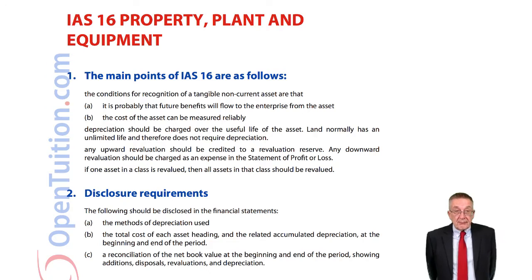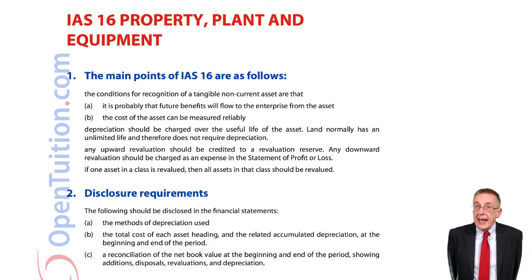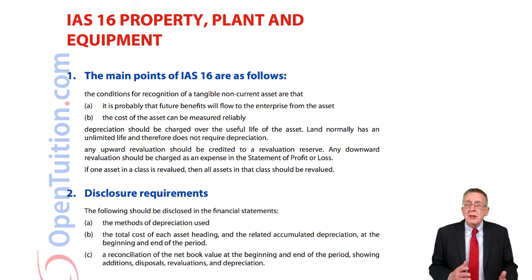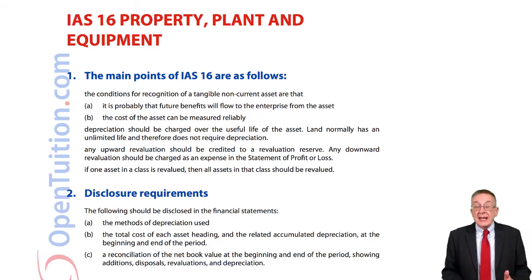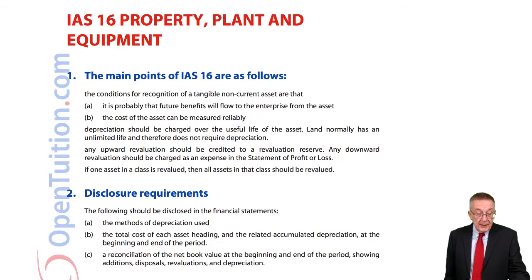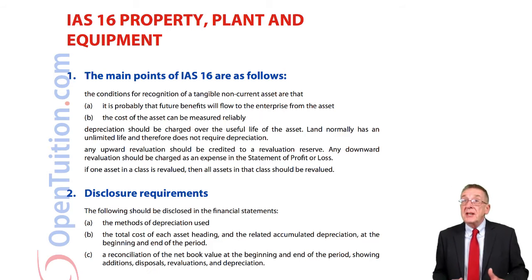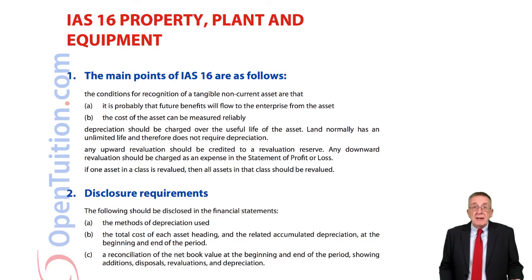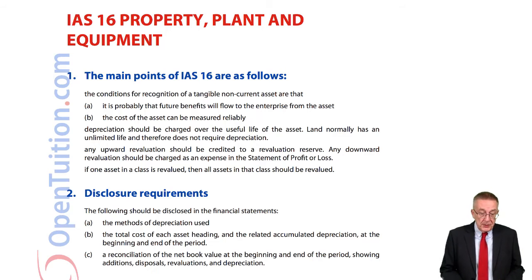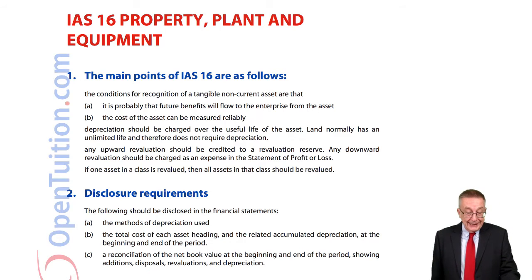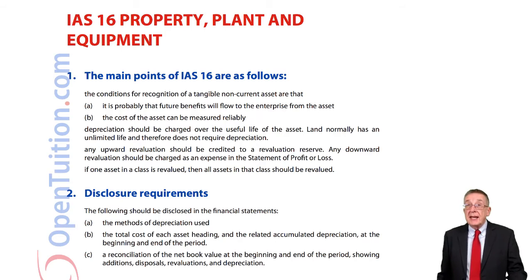Regarding disclosure requirements: there's no rule as to how we depreciate — we depreciate in whatever way we think is most sensible. For the exam, it's straight line depreciation or reducing balance. However, there has to be a note attached to the financial statements saying what methods of depreciation have been used — for example, buildings might depreciate straight line over a hundred years, cars might depreciate 25% reducing balance. We must also disclose the total cost of each asset heading and the accumulated depreciation at the beginning and end of the period.